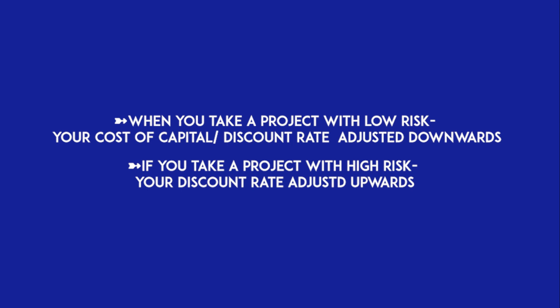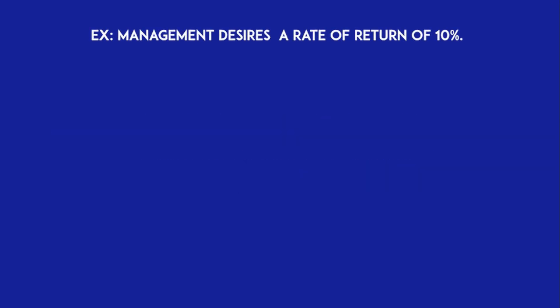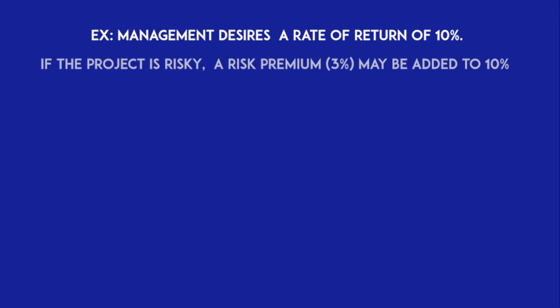This adjustment is done according to the degree of risk associated with the project. If the risk is high, the discount rate is raised by adding a risk premium. For example, if management desires a return of 10% and a risk premium of 3% is added, the risk adjusted discount rate becomes 13%. Projects which are more risky should be discounted at a higher rate than those which are less risky.